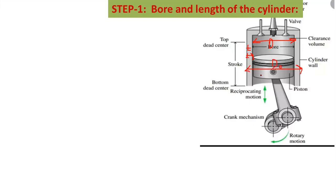This one is the piston. This pin is a piston pin or gudgeon pin. This one is a connecting rod. This is the crankshaft and crank — the crank mechanism.